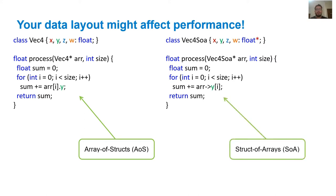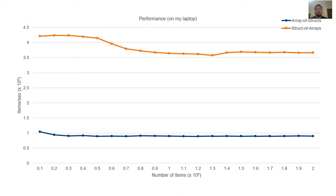So how do these two layouts fare against each other? Well, on my laptop, whipping up a quick benchmark shows that the array of structs version processes approximately a billion vectors per second, whereas the struct of arrays version sustains a rate of at least 3.5 billion vectors per second. A 3.5 times speedup just by rearranging our data in memory, which is quite impressive.